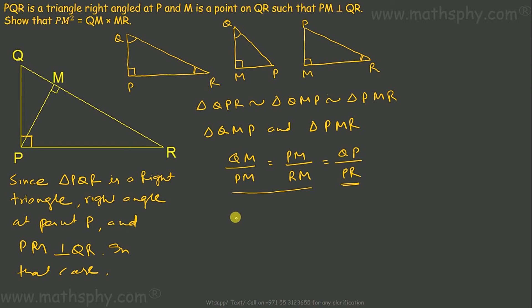Here, QM into RM will be equal to PM into PM, and PM square. So now I have PM square equals to QM into RM, or MR. We can write this way also. So PM square is equal to QM into MR. That's what we have to prove. All right.